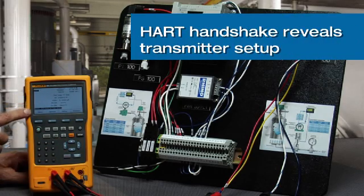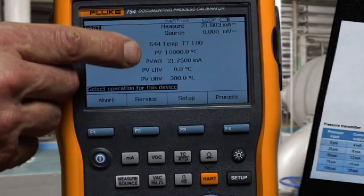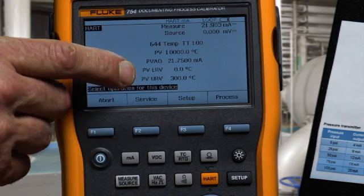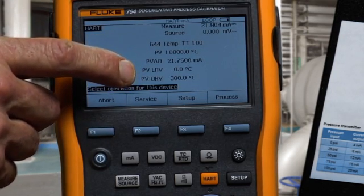Once communication is initiated, we see the tag of the transmitter, the PV, PVAO, and the transmitter's range, 0 to 300 degrees C.